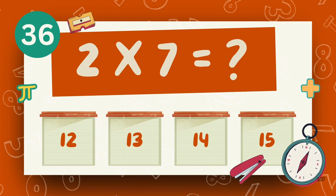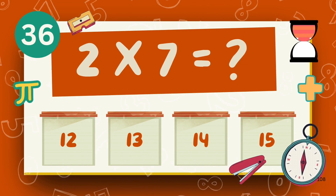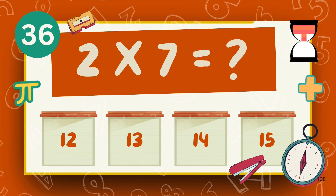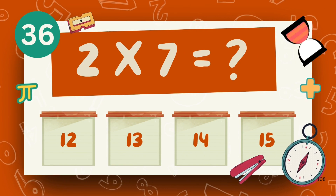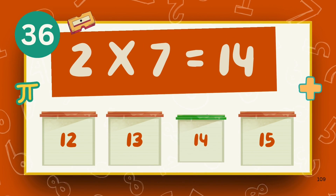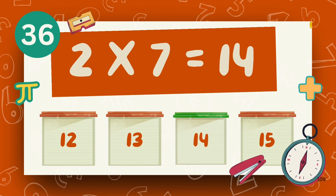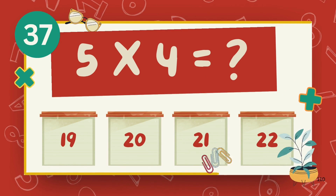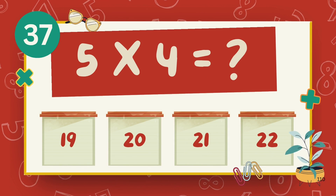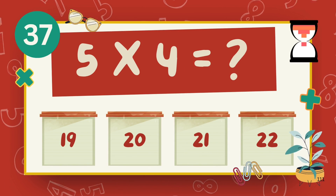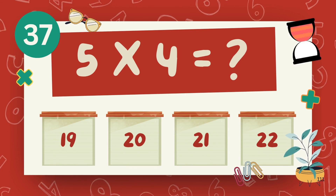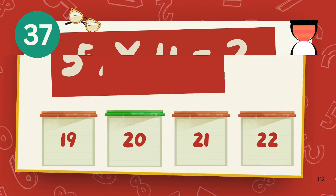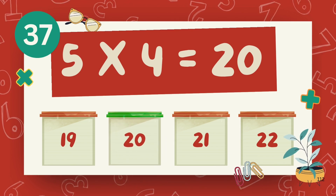What is 2 multiply 7? The answer is 14. What is 5 multiply 4? The answer is 20.